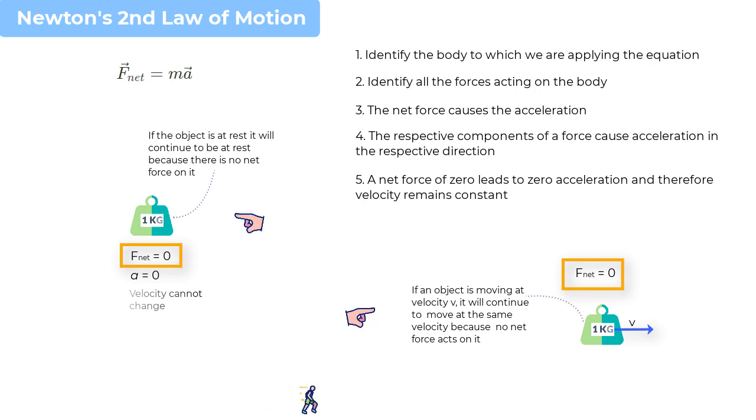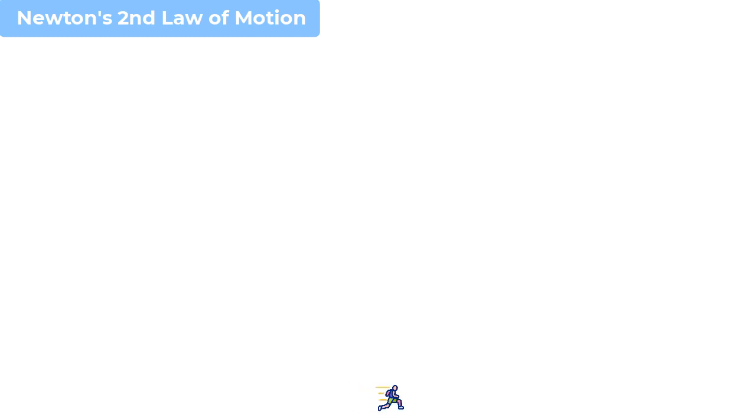So let us work on three simple situations that will help you to understand how you can use Newton's second law of motion. And what we have here is a mass of 0.2 kilograms, and it is subjected to a force F1 of 4N, and we are asked to find the acceleration of the mass. So we have a mass, and it is subjected to a certain force, and therefore Newton's second law of motion would apply.